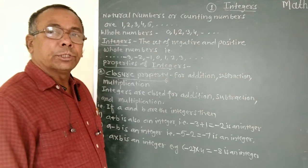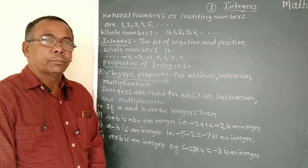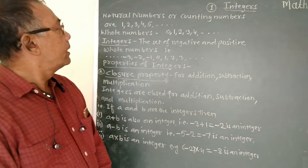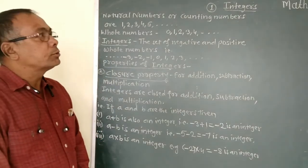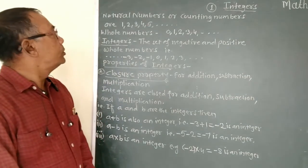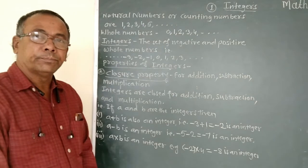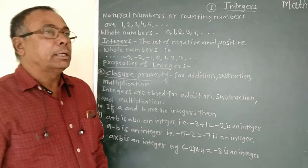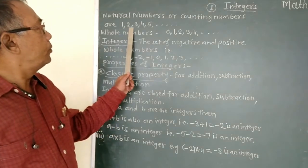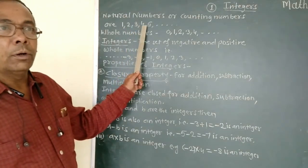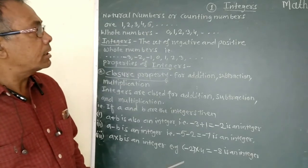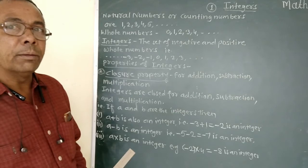Today we are going to see our first lesson, that is integers. Before going to start integers, we must know the natural numbers and whole numbers. The natural numbers are 1, 2, 3, 4, 5, etc. The natural numbers are also called counting numbers.